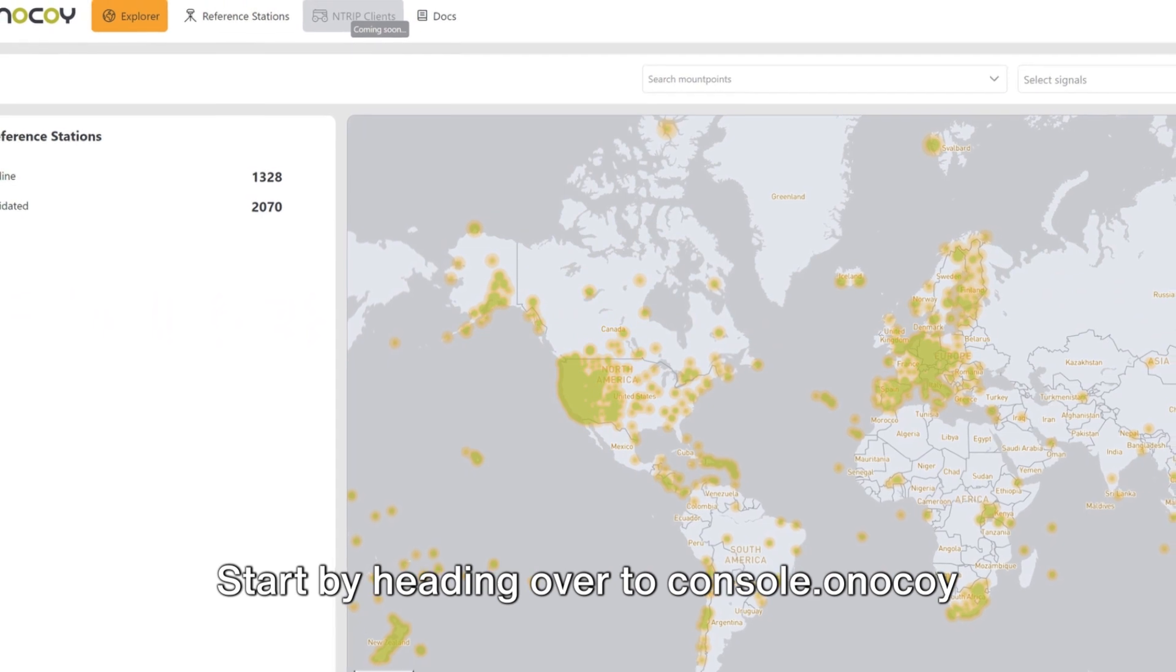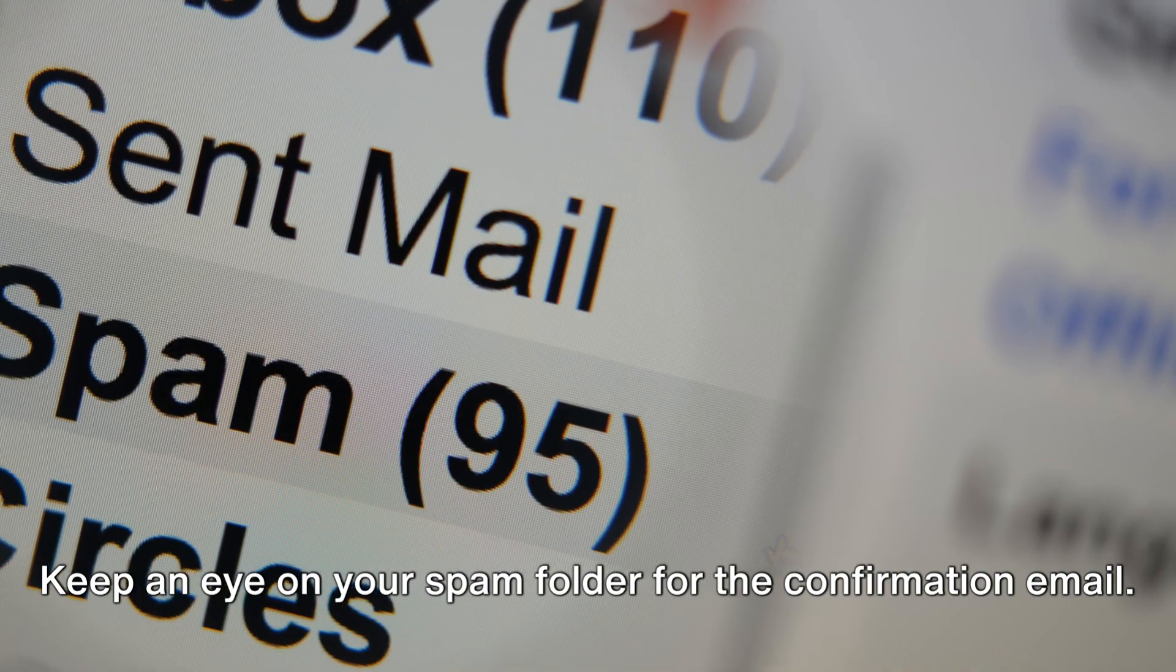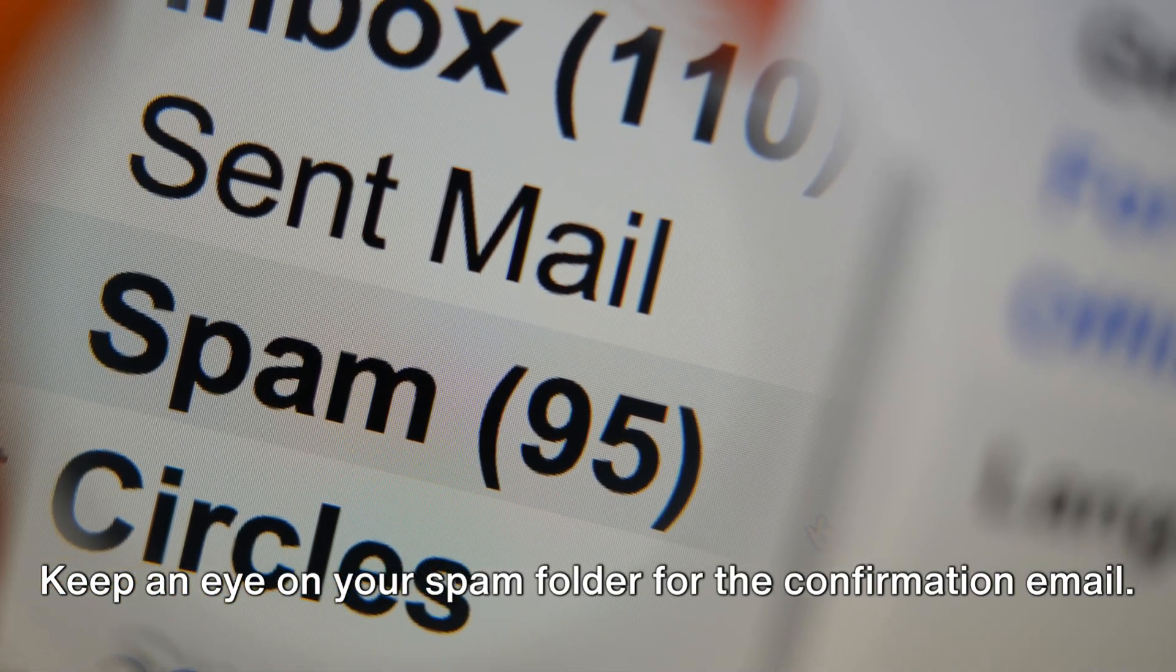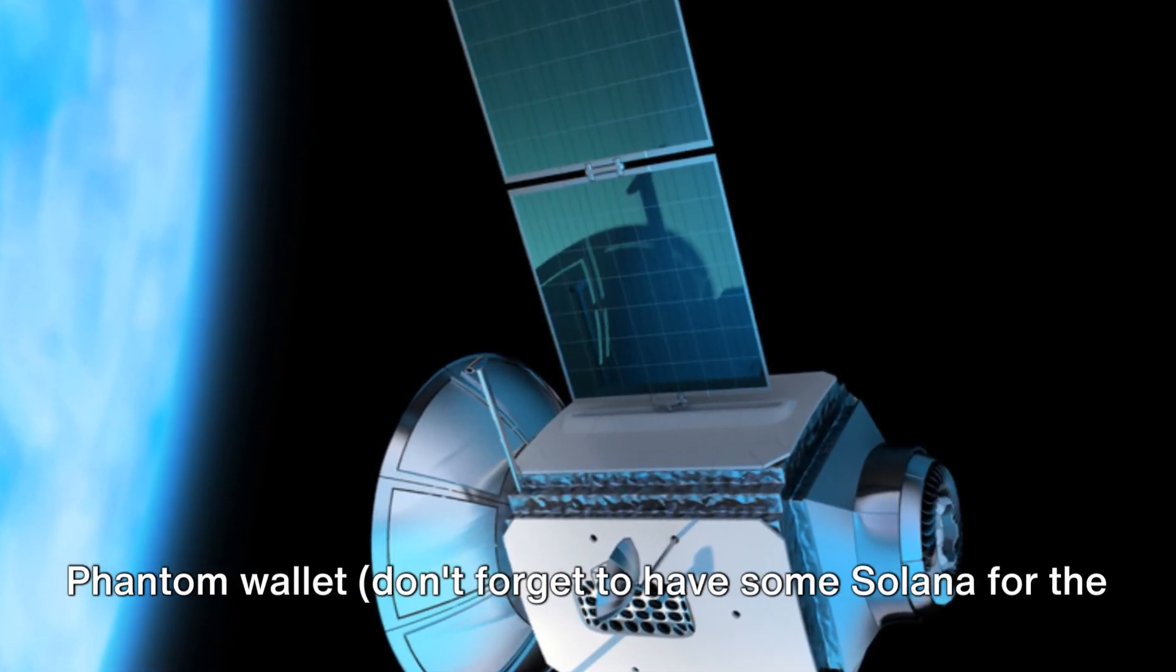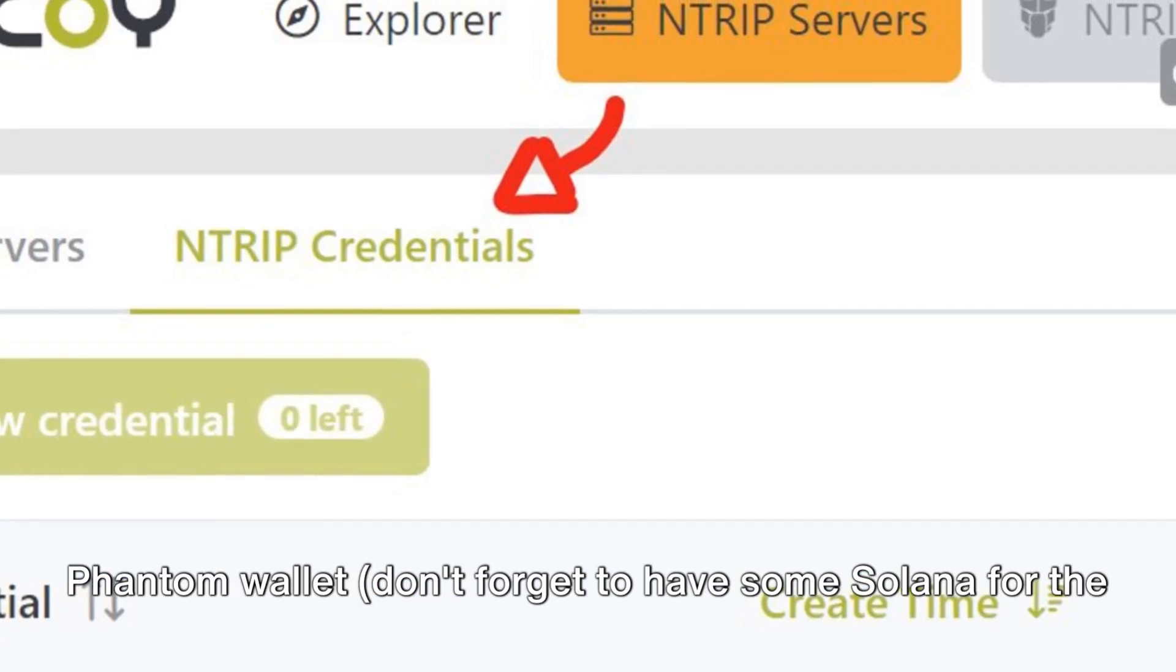Start by heading over to Console Onokoi to create an account. Keep an eye on your spam folder for the confirmation email. Once your account is set up and you've connected your Phantom wallet, don't forget to have some Solana for the fees.